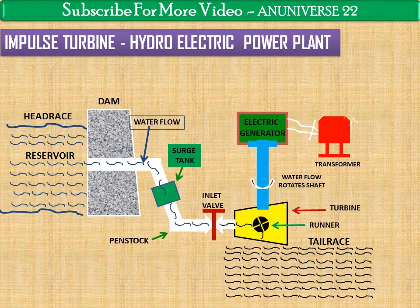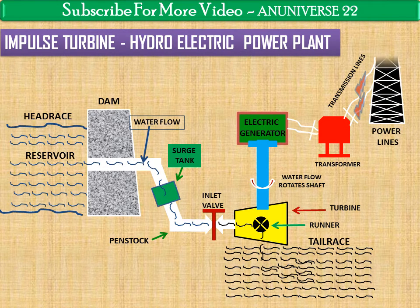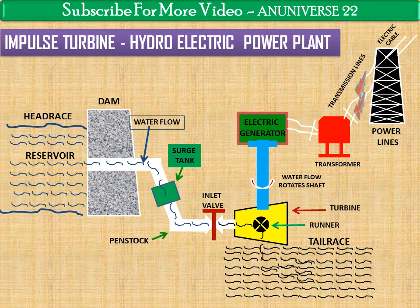From the transformer, with the help of transmission lines and power lines, and from these power lines, with the help of electrical cables, the electricity is transmitted to offices, houses, and the plants and industries where it is required.